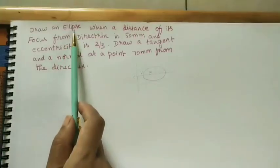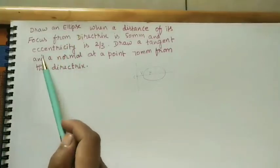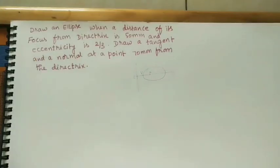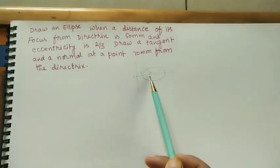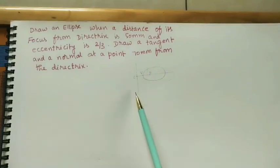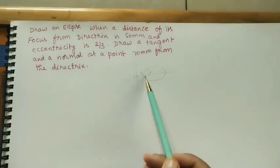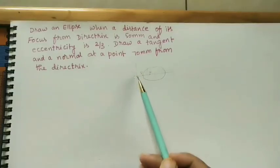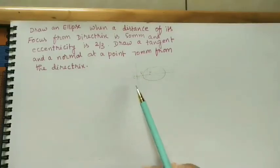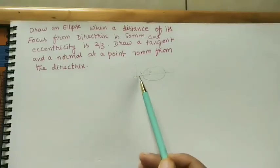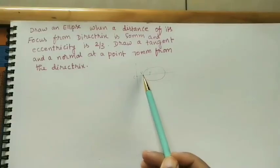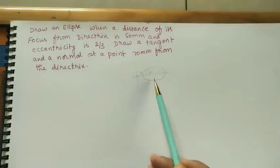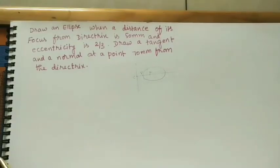Let us discuss how to draw an ellipse by using the eccentricity method. In it we will get the ellipse like this. It has one fixed point called focus, and one fixed straight line called directrix. This line is the axis. The intersection point of directrix and axis is the C point. On the axis, V is one of the points of the ellipse.